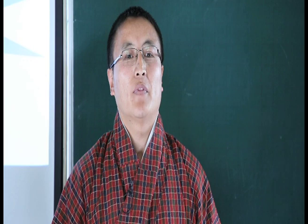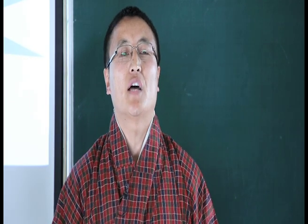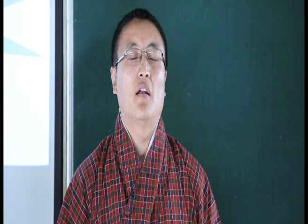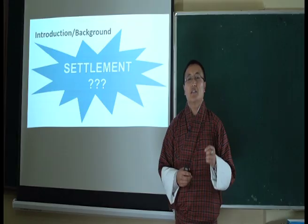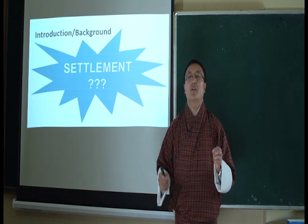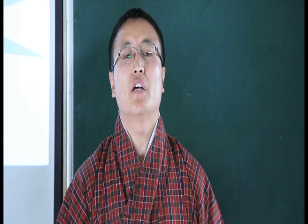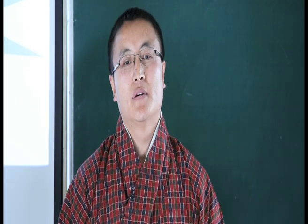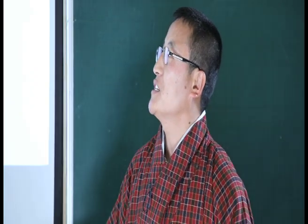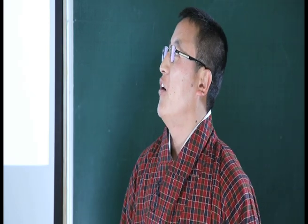The size and patterns of settlement differ from one place to another and keep on changing over time. In a settlement, people live a systematic life, usually sharing a common occupation, language, religion, and culture. Settlements are broadly classified into two types: urban settlement and rural settlement, and are further subdivided based on their patterns. In simple terms, a settlement is a place where people live and it consists of a single or a group of houses.